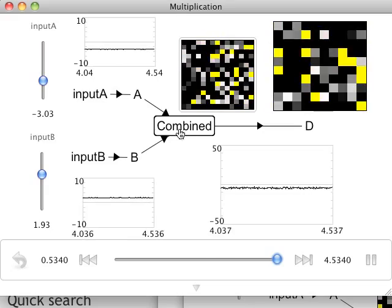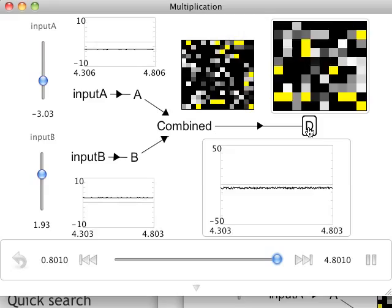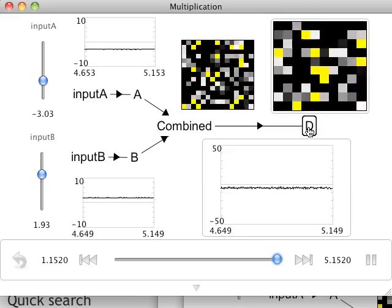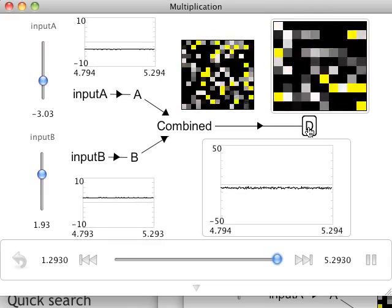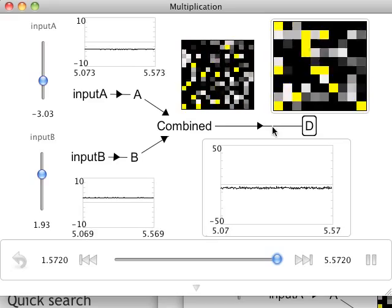It then projects out a nonlinear function of that two-dimensional vector space into population D. This is analogous to the projection done in the squaring video. Here, the nonlinear function being estimated is the product of the two dimensions in the combined vector space.